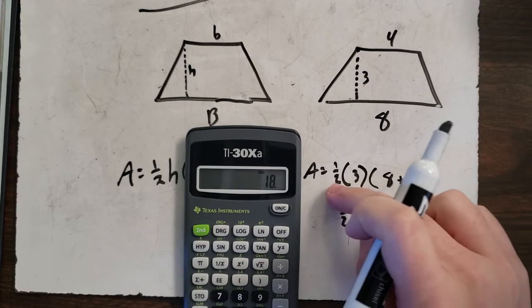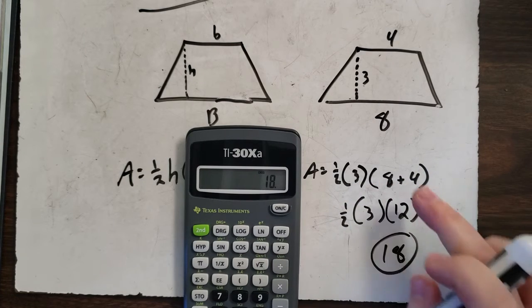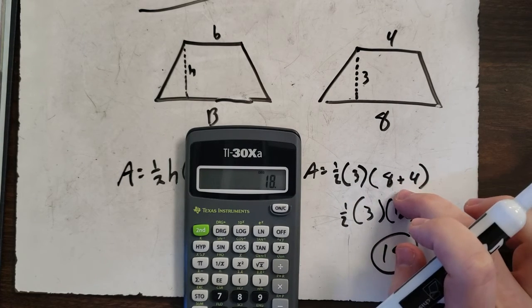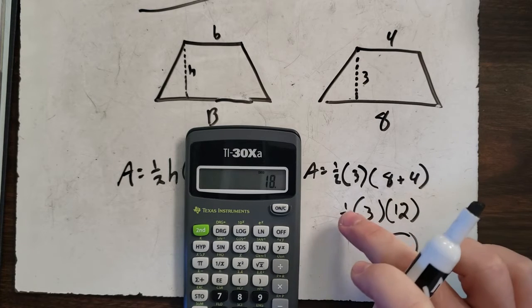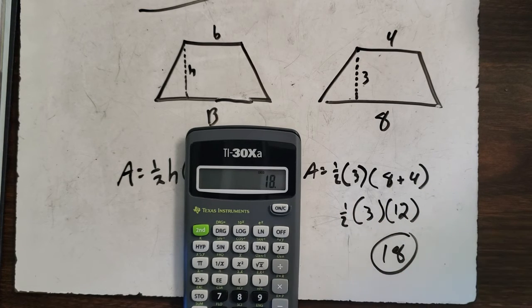Simple as that. One-half times three times eight plus four. Add these up first to get that number, then multiply straight through, and you get 18. It's as simple as that.